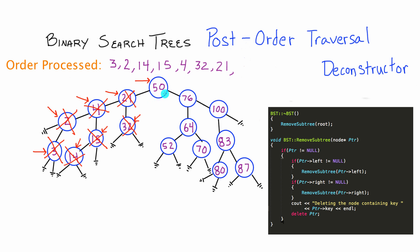Node 50 has already checked left but hasn't checked right yet, so we call remove subtree with the pointer to node 50's right child, node 76. Node 76 looks left and has a child, so we call remove subtree with a pointer to node 64. Node 64 looks at its left child and calls remove subtree with a pointer to node 52. Node 52 looks left and right, has no children, and its memory is deallocated. We fall back to node 64, which looks right and calls remove subtree with a pointer to node 70. Node 70 has no children, so its memory is deallocated. We fall back to node 64, which has now looked left and right, and deallocate node 64.